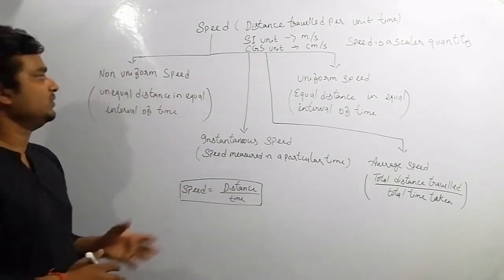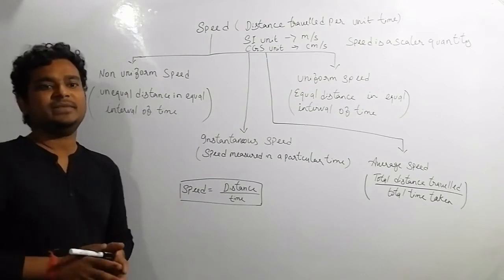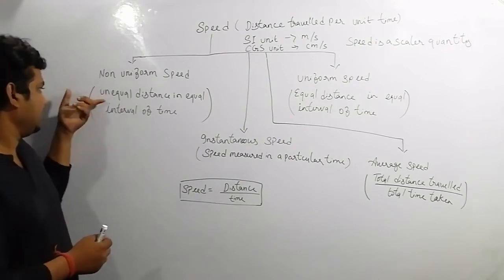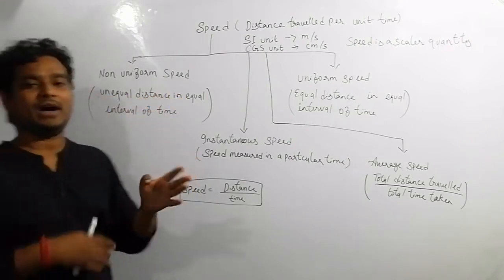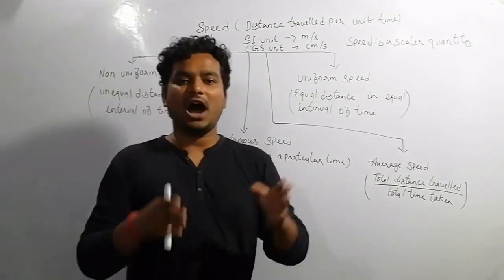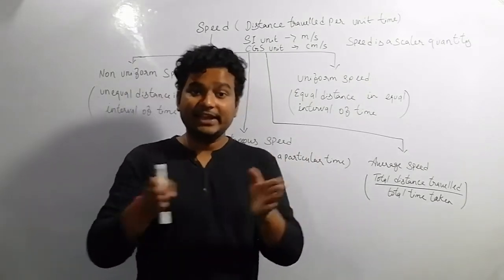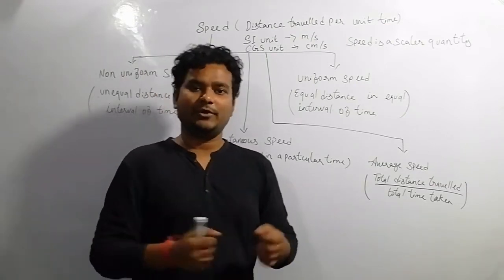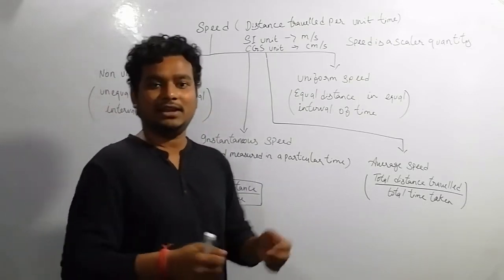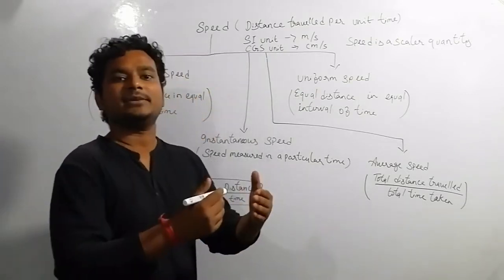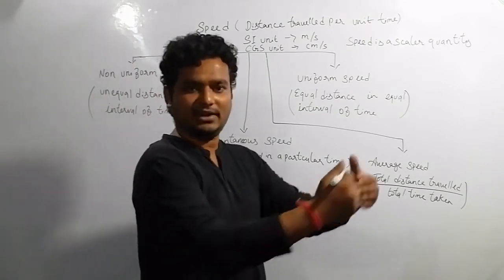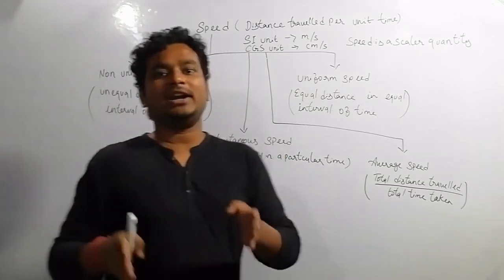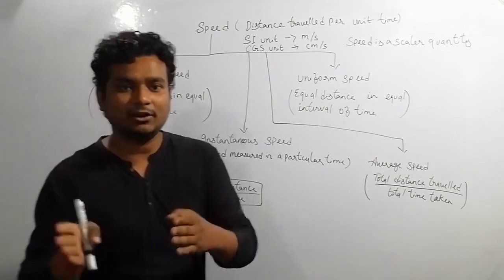First, we are coming to non-uniform speed. Non-uniform speed means a body is traveling unequal distance in equal intervals of time. For example, when you are driving your car or riding a bicycle in traffic, sometimes your speed increases, sometimes you stop, and sometimes you increase your speed again. The speed is changing at every instant — that is called non-uniform speed.